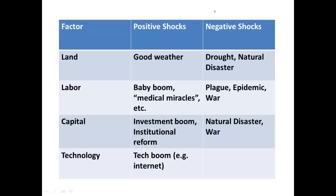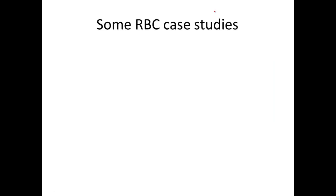Finally, technology. We're pretty blessed with constant technological advances. A big one we'll look at is the rise of the internet in the 1990s, which had big implications for business productivity. What could go wrong with technology? Fortunately, we're not used to thinking about losing technology outside of sci-fi movies, but it has happened in human history. Think about the medieval era — the Dark Ages — where a lot of ancient wisdom and learning was lost or diminished. So it can happen. Hopefully it won't happen in our lifetimes, but it definitely could.